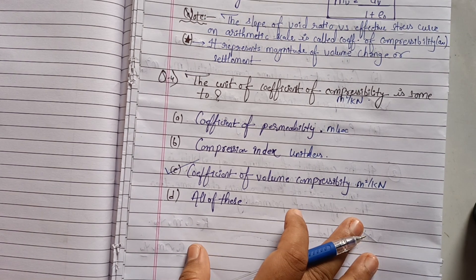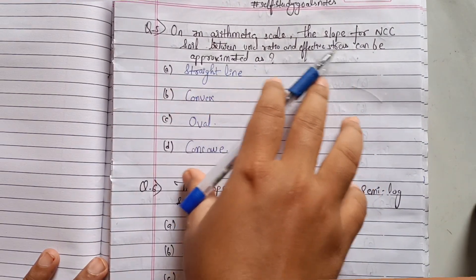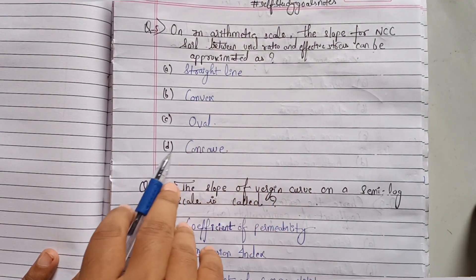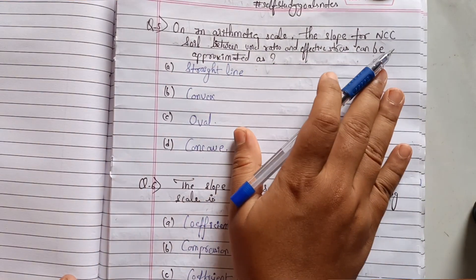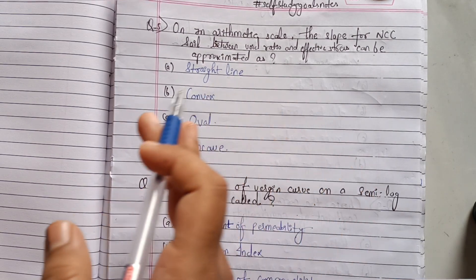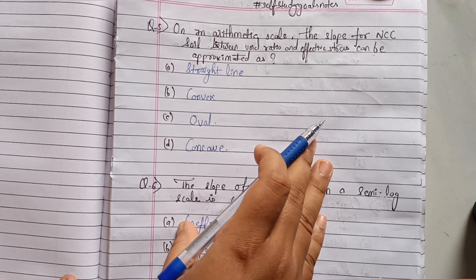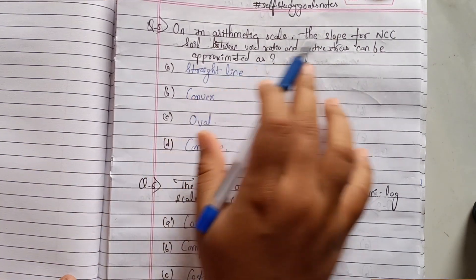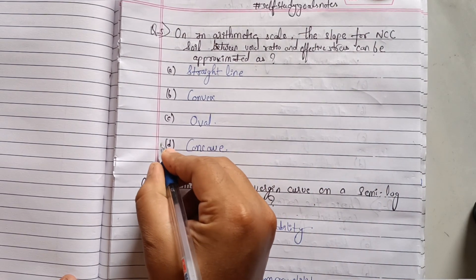Question five: on an arithmetic scale, the slope for NCC soil between void ratio and effective stress can be approximated as — straight line, convex, oval, or concave? For the arithmetic scale with NCC soil, the correct option is option D — the slope will be concave. You can refer to the previous lecture for the different types of slope for NCC and OCC soil on arithmetic and semi-log scales.